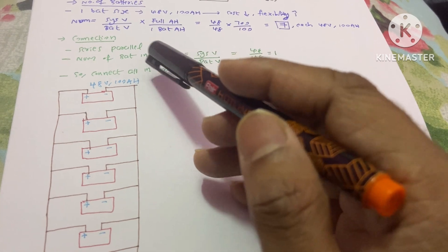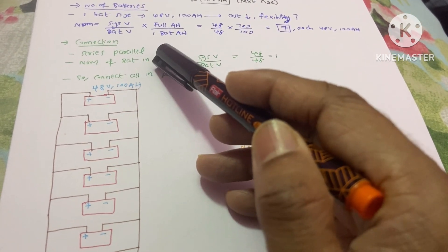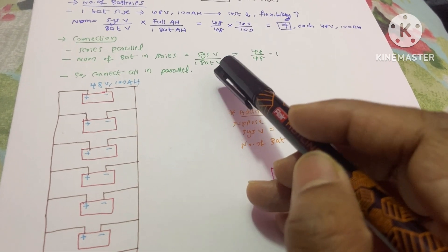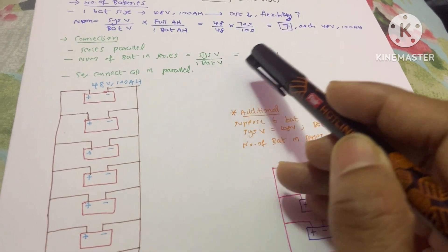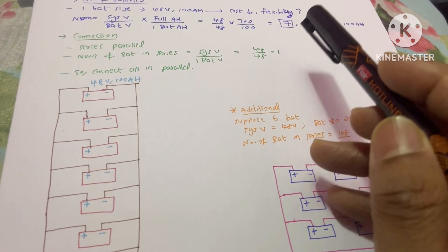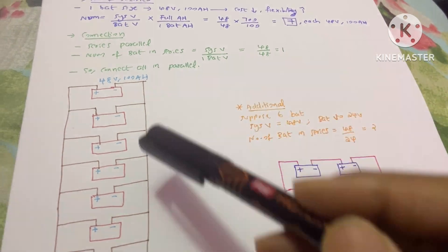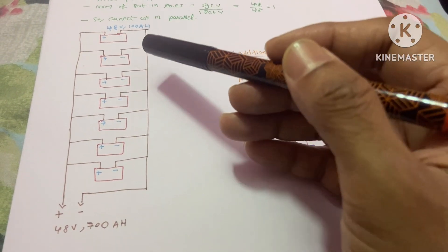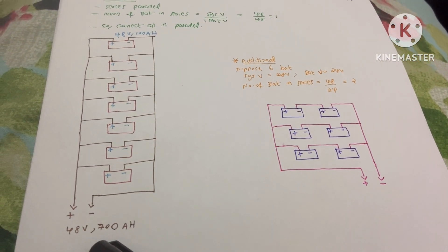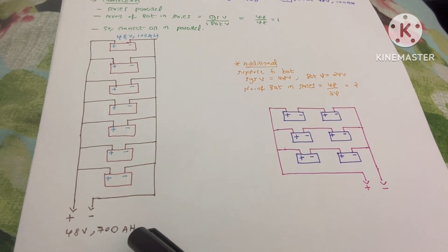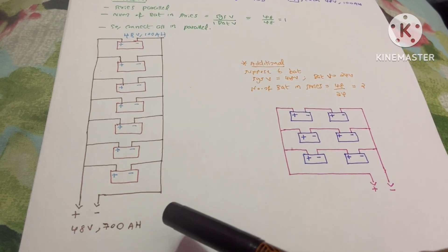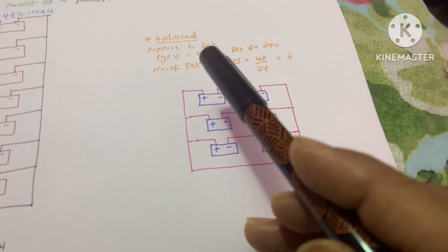We connect the seven batteries in series-parallel, same as panels. Number of batteries in series = system voltage / battery voltage = 48 / 48 = 1. Since the result is 1, no series connection is needed — connect everything in parallel. Seven batteries, each 48V 100Ah, connected in parallel give a final output of 48V 700Ah, because in parallel the voltage stays the same and the Ah values add up.